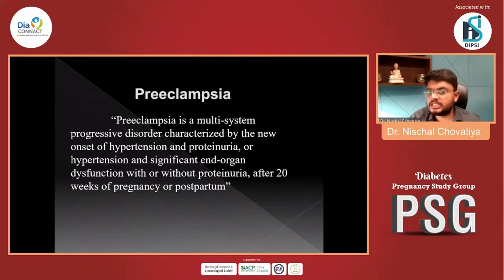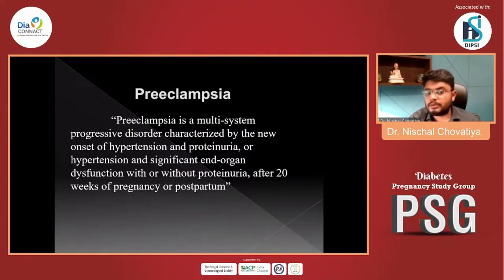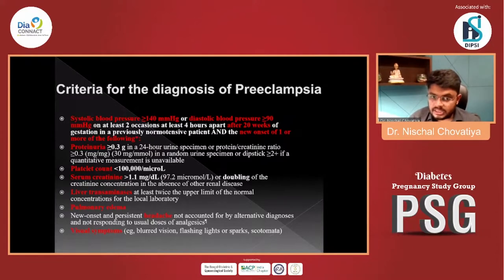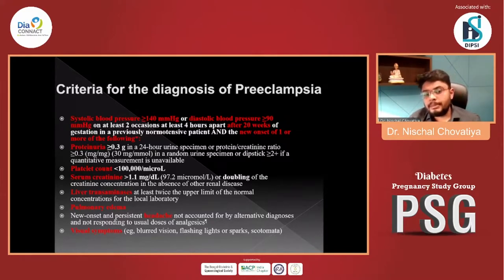Preeclampsia is a multi-system progressive disorder characterized by new onset of hypertension and proteinuria, or hypertension and significant end-organ dysfunction with or without proteinuria after 20 weeks of pregnancy or postpartum. Criteria for diagnosis: systolic BP more than 140, diastolic more than 90, on at least two occasions four hours apart after 20 weeks, with proteinuria of more than 0.3 gram in 24-hour urinary specimen.